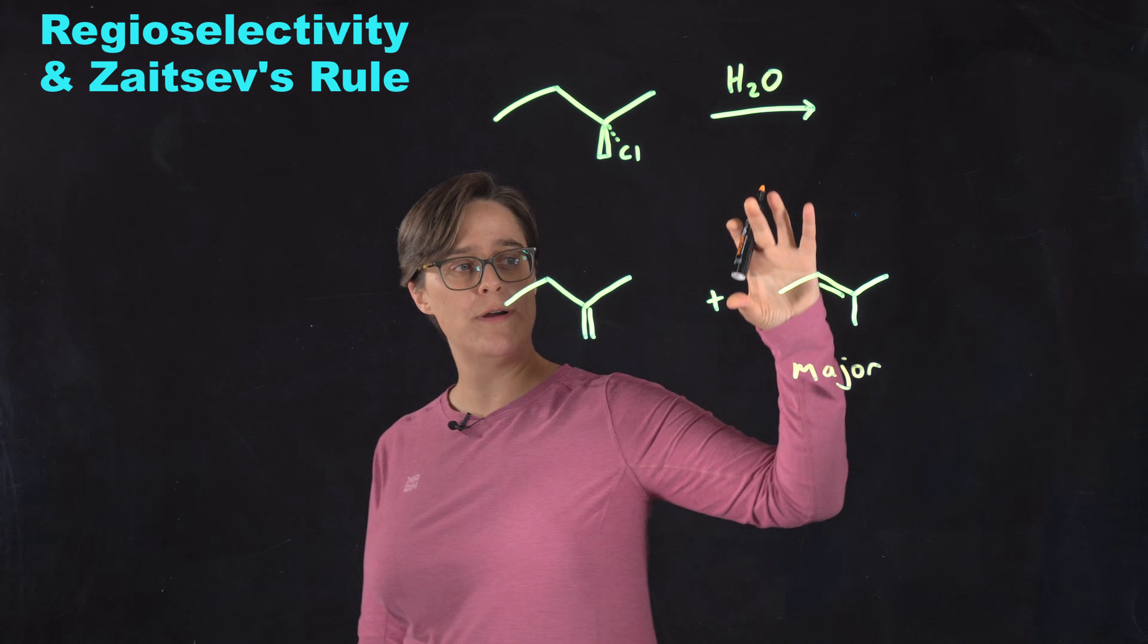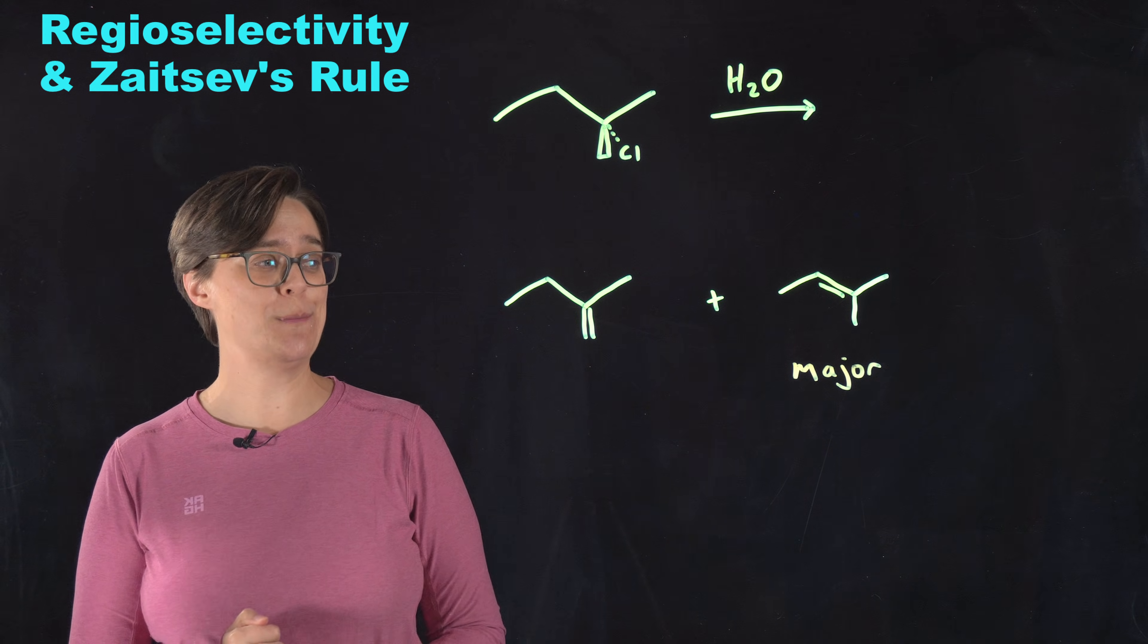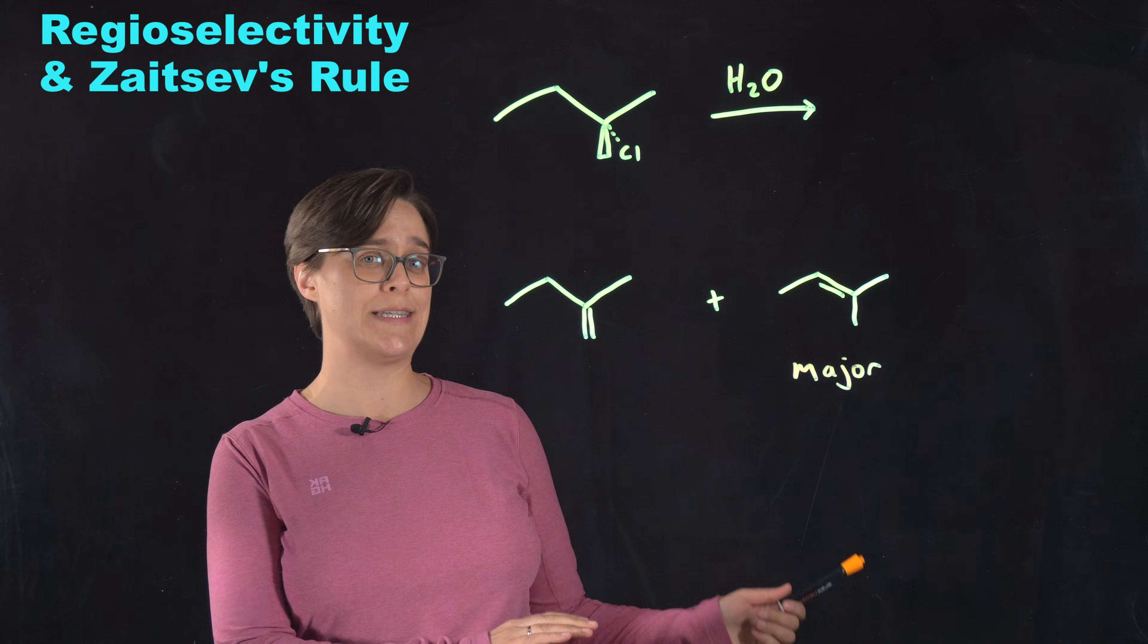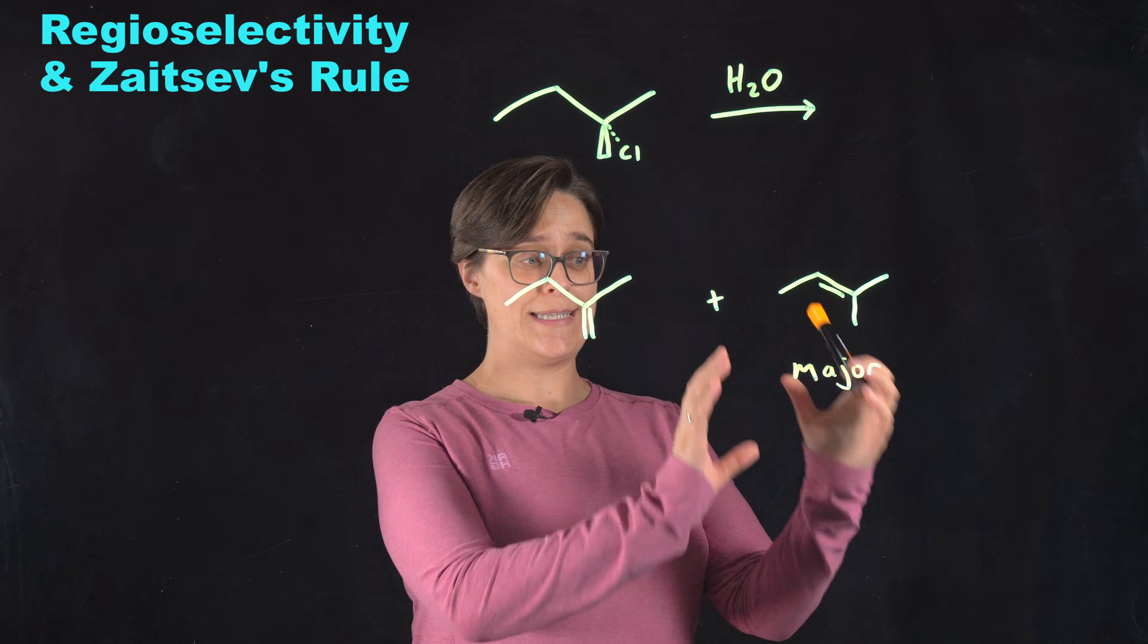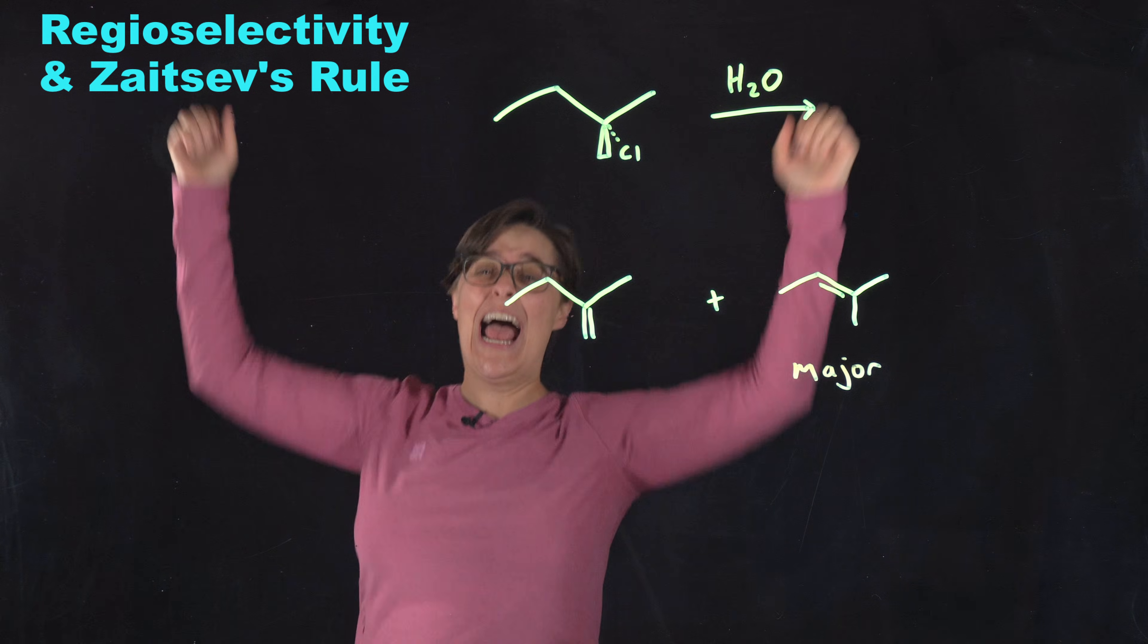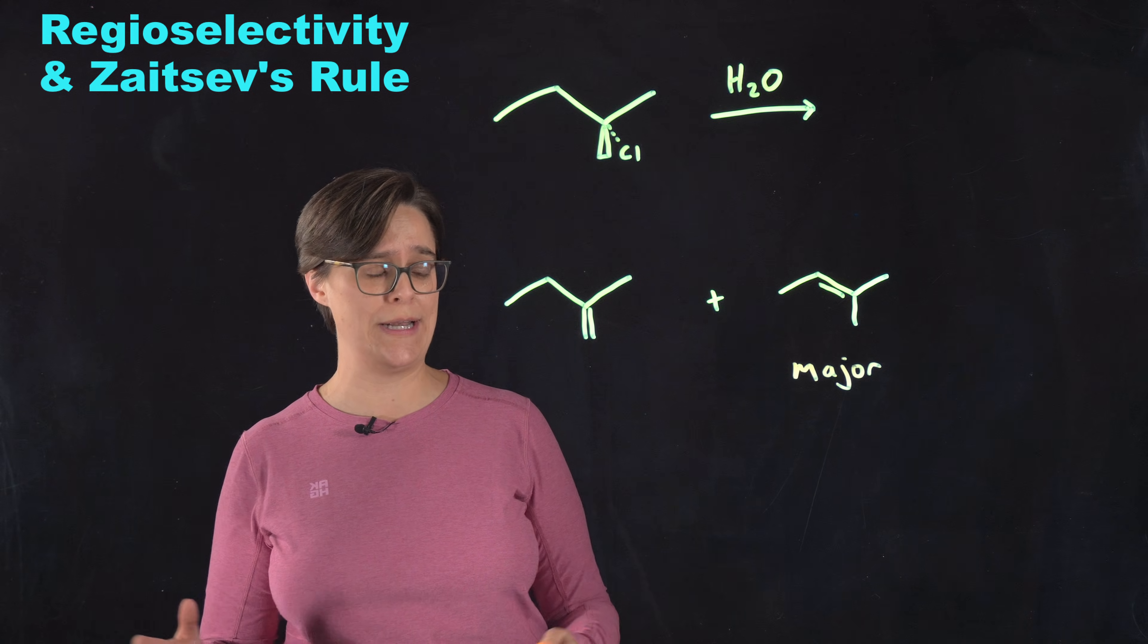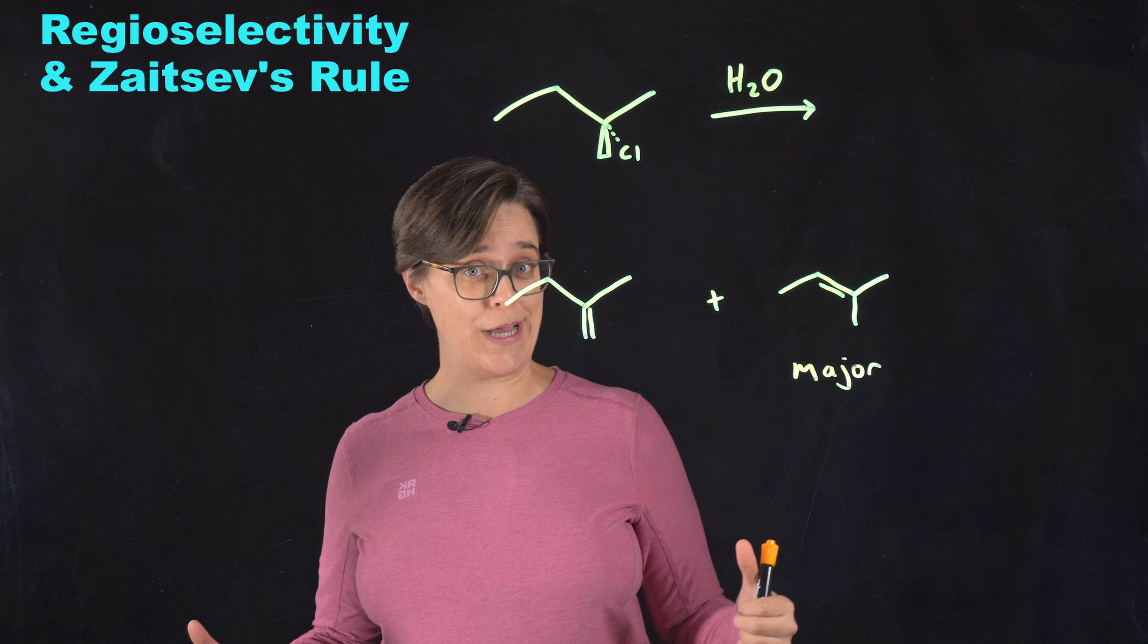What that means is there will be more of this product than this product. Now, I have some really great news for you about Zaitsev's rule in E1. Do you remember back in my E2 video when I spent about 15 minutes talking about all the different cases when Zaitsev's rule doesn't work? I don't have to do that here. In E1, Zaitsev's rule works most of the time. Now, there are some more advanced cases where Zaitsev's rule doesn't work, but it's involving things like carbocation rearrangement and kinetic control versus thermodynamic control. And we're not there yet. So for the purposes of this video, Zaitsev's rule actually works.